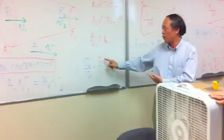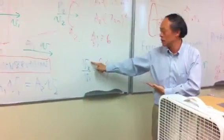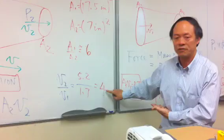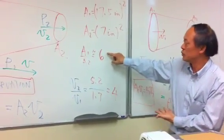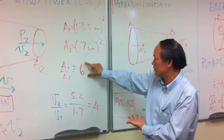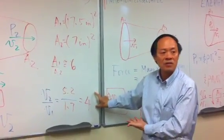So we have a ratio of V2 at the output divided by the velocity of the input equal to a factor of 4. Now there's a slight difference: we said that A1 and A2 is a factor of 6 whereas the velocity is a factor of 4.